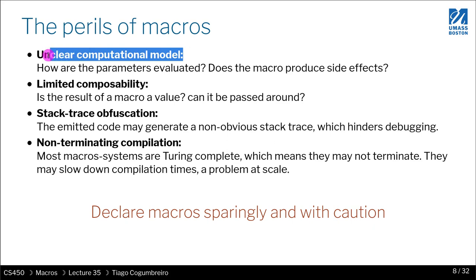The major problem is really the unclear computational model. Because macros are essentially generating code, it is not obvious what the generated code is going to do. Most macro systems have no way of describing or declaring what the side effect of a macro is. So if you call a macro, you could think you're calling a function, but in reality it's maybe generating 300 lines of code and doing all sorts of implicit side effects that are mismatching your assumptions as a programmer.